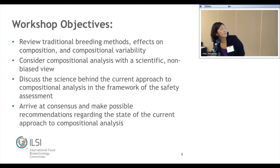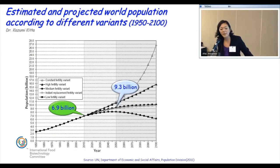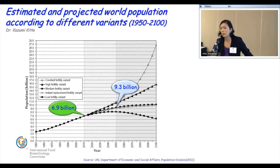Here are the objectives again. The one thing I wanted to say is that I think in this room we all have the same objective. We know that in 2050 the population is projected to be 9.3 billion people, so our objective for all of us is to feed this population. Whether we come from academia, industry, or government, we all do have the same purpose.